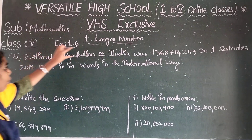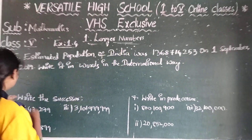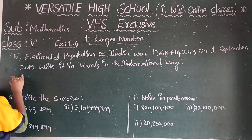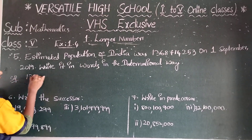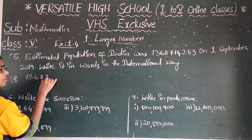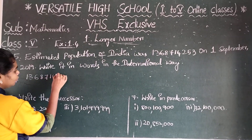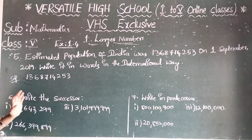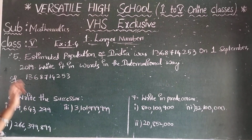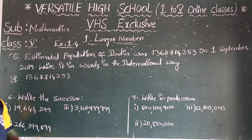So the estimated population of India was given as the number 1,365,714,253 on 1st September 2019. Write it in words in an international way.